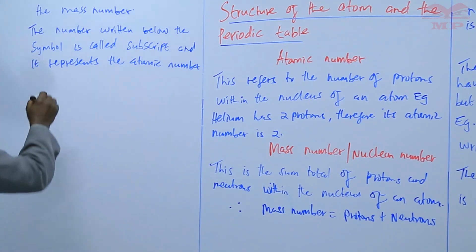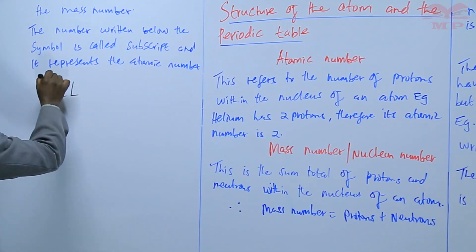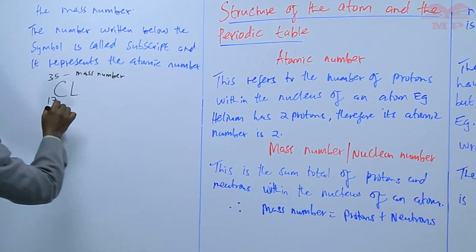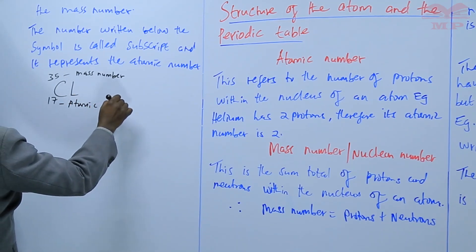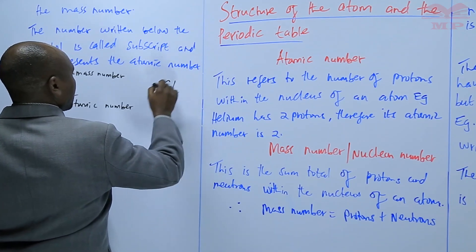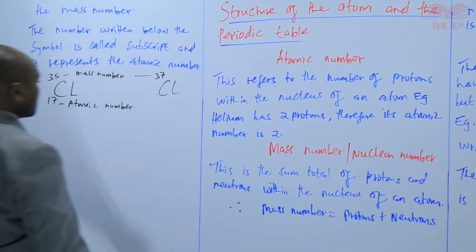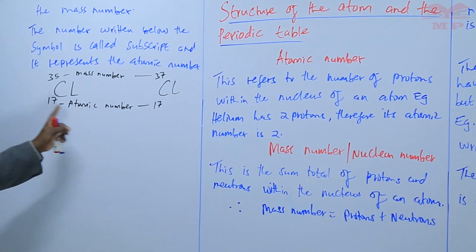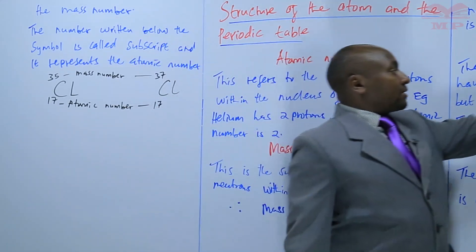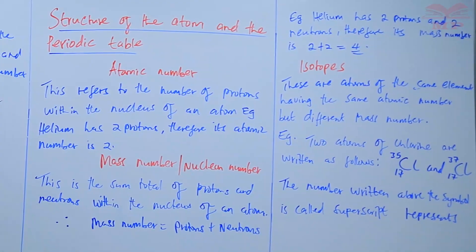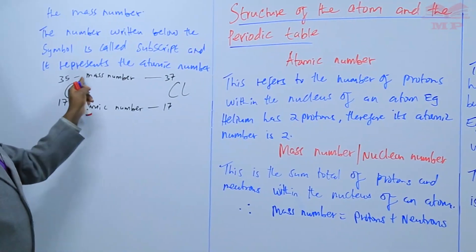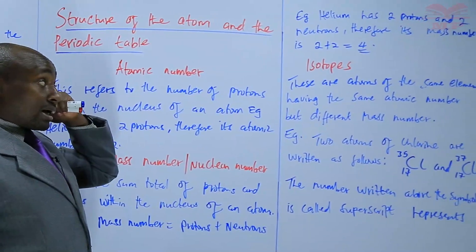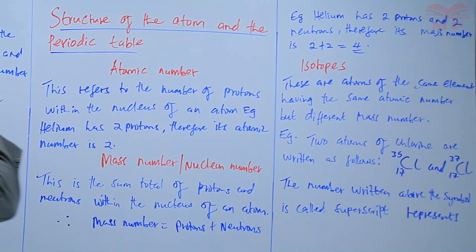The first atom, chlorine-35 with atomic number 17: the mass number is 35 and the atomic number is 17. The other one is chlorine-37, also with atomic number 17 — mass number 37, atomic number 17. So the atomic number is the same, showing they are atoms of the same element, but the mass number is different. Isotopes are atoms of the same element having the same atomic number but different mass number.